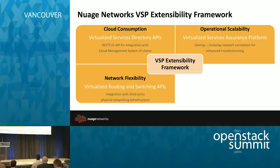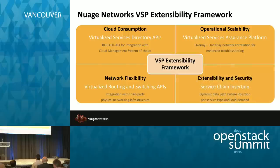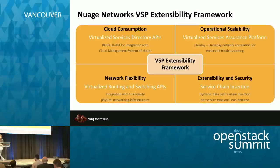Third, we have a set of virtual routing and switching APIs, and this is where we incorporate with the physical layer on the network. Partners like Arista, with whom we're working very closely, are among those that consume these APIs and help us expand the ecosystem. Finally, we have an extensibility and scalability framework that we use for service chaining — this is where the value-add comes into the SDN layers. Partners such as F5 for ADC or Palo Alto Networks use this extensibility and security framework for rolling out services.